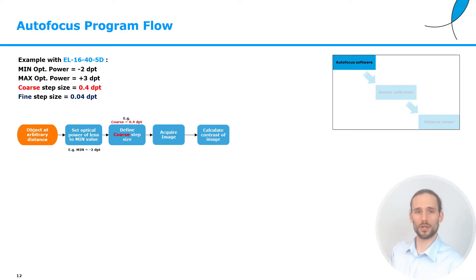Then we acquire our first image. We calculate the contrast of such image. Then we need to move to the next point. Basically, now we would have acquired an image at the point minus two diopters. Now, the first decision comes about. We have to check whether we are in the coarse or the fine step size regime.